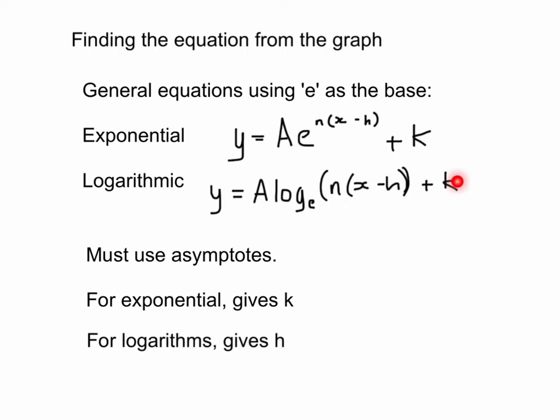So the asymptotes will give us the k value for the exponential. That's because exponentials have a horizontal asymptote, y equals k. And for logarithms, it's the other way. It'll give you an h value, which is from the x equals h asymptote.